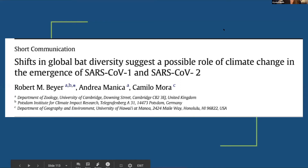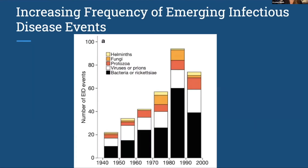This paper, published January 21st in Science of the Total Environment, explores how COVID-19 came about and points to how the effects of climate change on bat populations led to an increase in bat-borne coronaviruses. We've talked previously about how we're seeing an increase in the frequency of emerging infectious disease events.